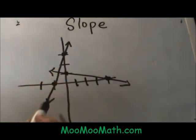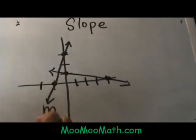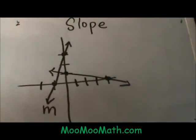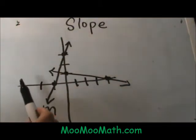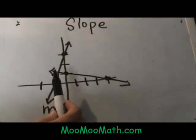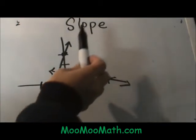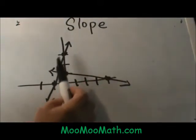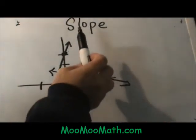This first line, I'm going to call that line M, has a positive slope. How do we know that? It's because as we are going left to right the line is going upward.